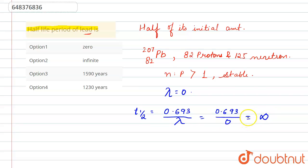equals to infinity. So we have calculated that t half, that is the half life period of lead, is equals to infinity. Alright, so we can say that option B, that is option 2, is the correct answer. I